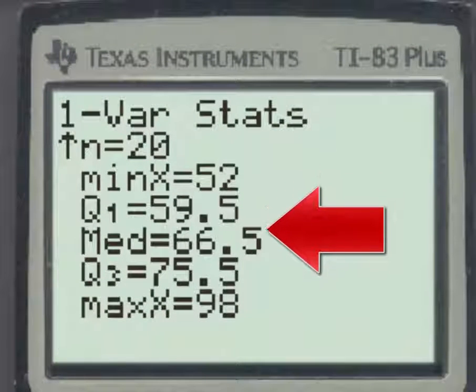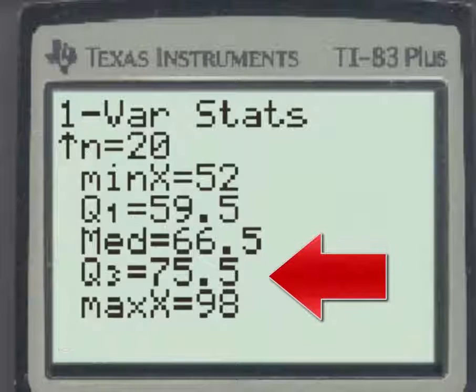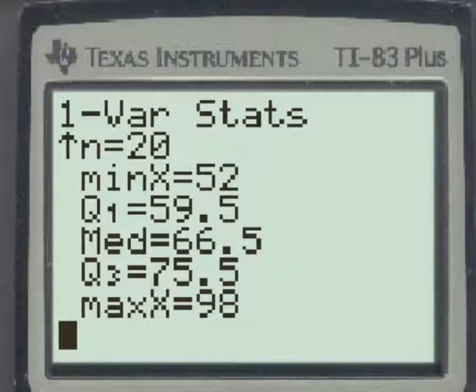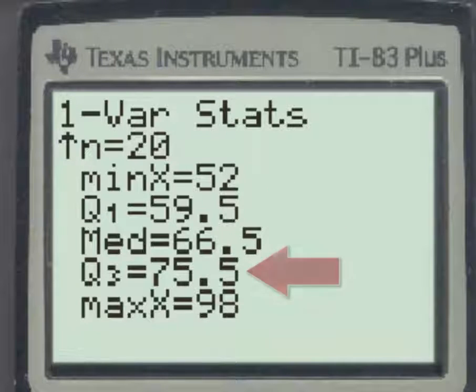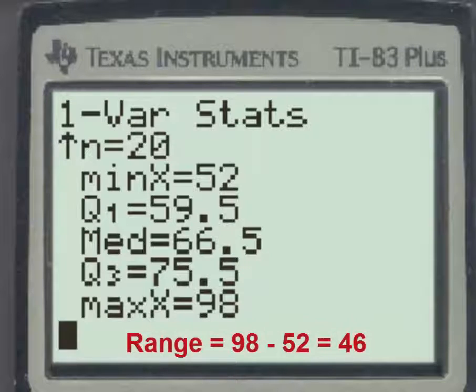As you go to the bottom, you see that the five-number summary, which are the minimum, Q1, the median, Q3, and the maximum, are given. So if we were asked to find the first quartile, the answer would be 59.5, Q1, and similarly, the third quartile would be 75.5, which is Q3.